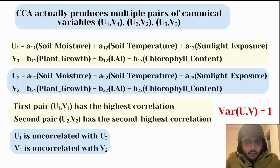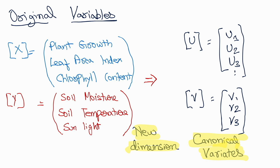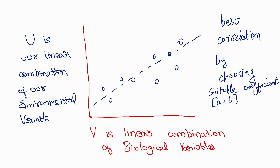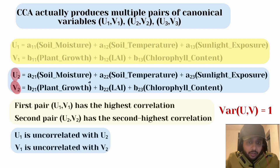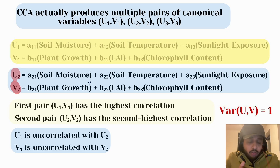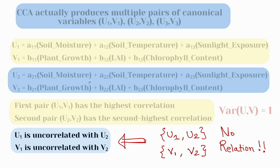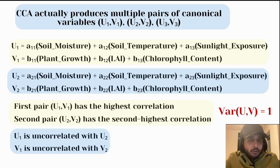With these criteria, u1 and v1 form the first canonical variates as linear combinations of our original variables. We can similarly define a second set u2 and v2 such that the correlation between u2 and v2 is the second best achievable. An important condition is that u2 and v2 are completely uncorrelated with the first canonical variates — u2 is uncorrelated with u1, and v2 is uncorrelated with v1 — so each canonical variate captures an independent pattern.